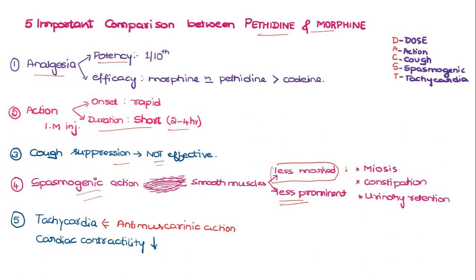The spasmogenic action on smooth muscle is less marked, resulting in less miosis, less constipation, and less urinary retention. Pethidine produces tachycardia mainly due to its anti-muscarinic action, so tachycardia occurs instead of bradycardia. There is also a reduction in cardiac contractility.